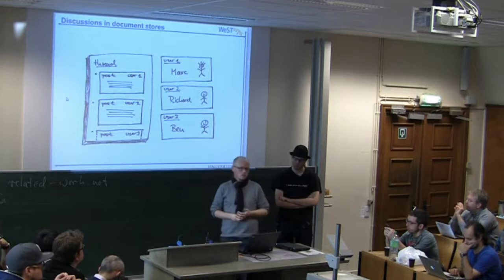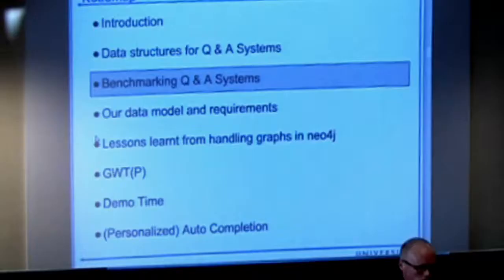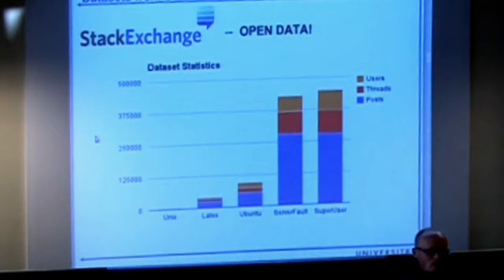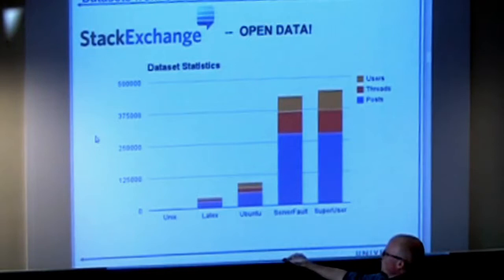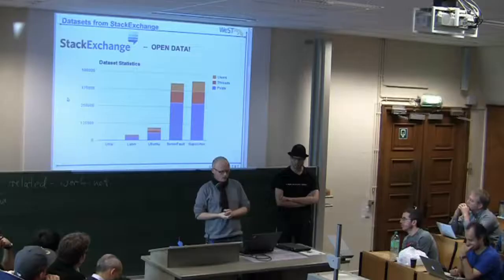We did a hands-on evaluation using open data — Stack Exchange published their data sets, and we took five of them as real-life discussion systems. The first is Unix discussions, which is really small. The biggest is the Super User data set. We couldn't fit the full Stack Overflow data set in memory for our benchmark, so we dropped that one.